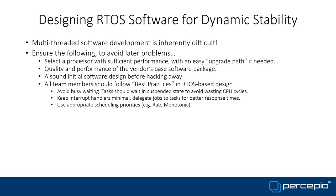Assigning task priorities is a tricky field — a whole research area on its own. Methods like Rate Monotonic can assign priorities in a way that gives more confidence in execution and timing requirements. In Rate Monotonic, priorities are assigned according to task rates: a task executing every 2 milliseconds should have higher priority than one executing every 50 milliseconds. You need to track task periodicity to apply this.